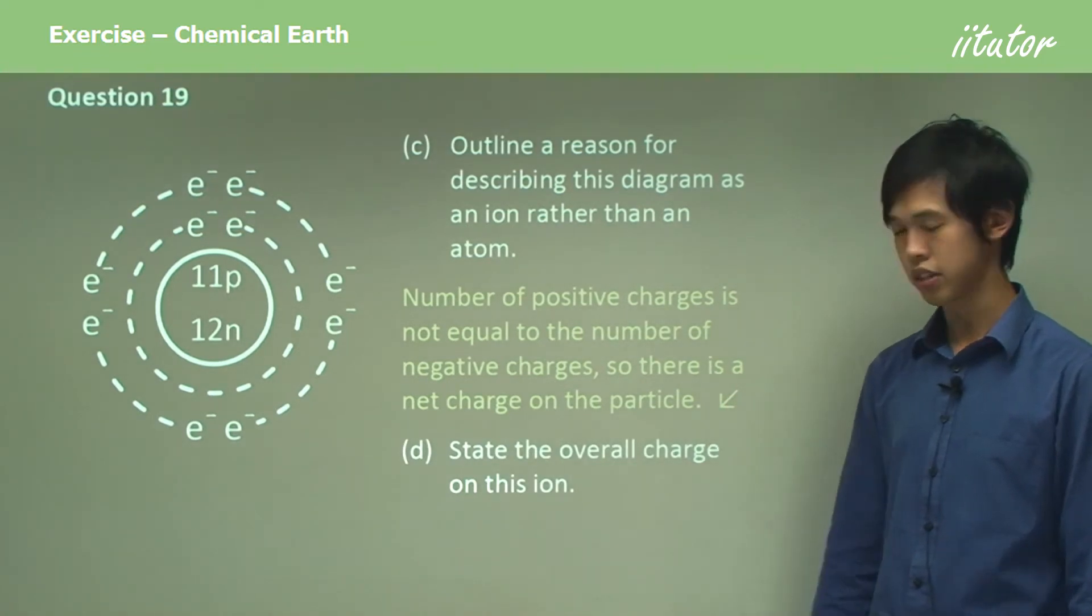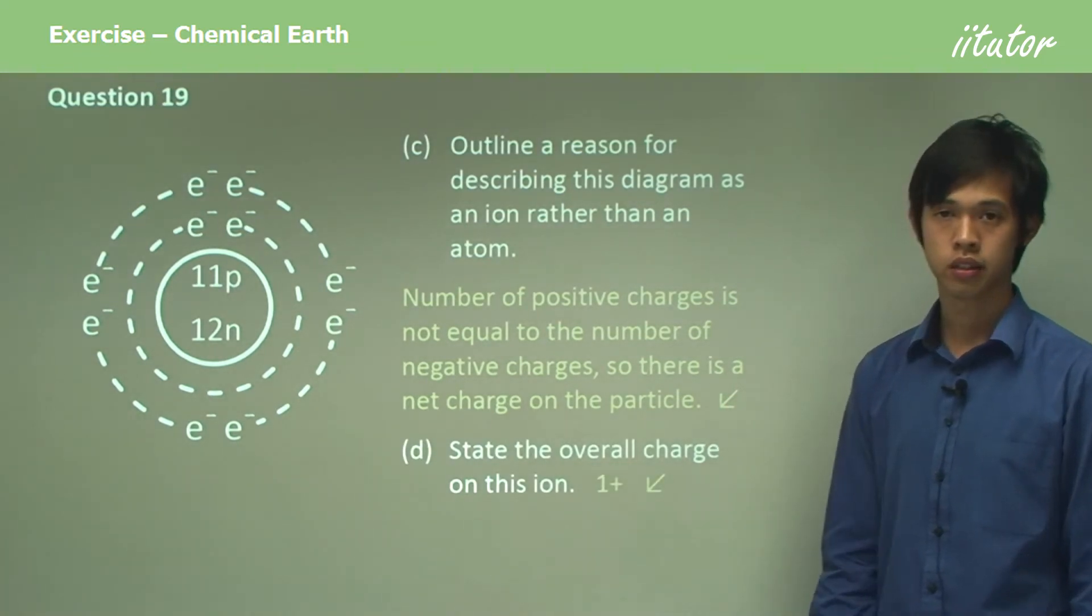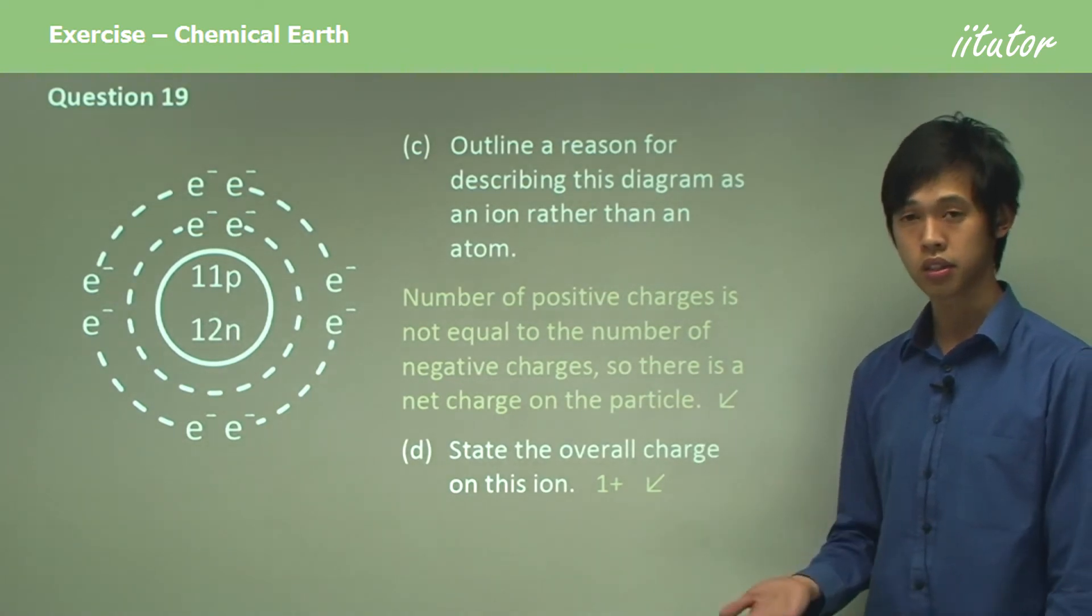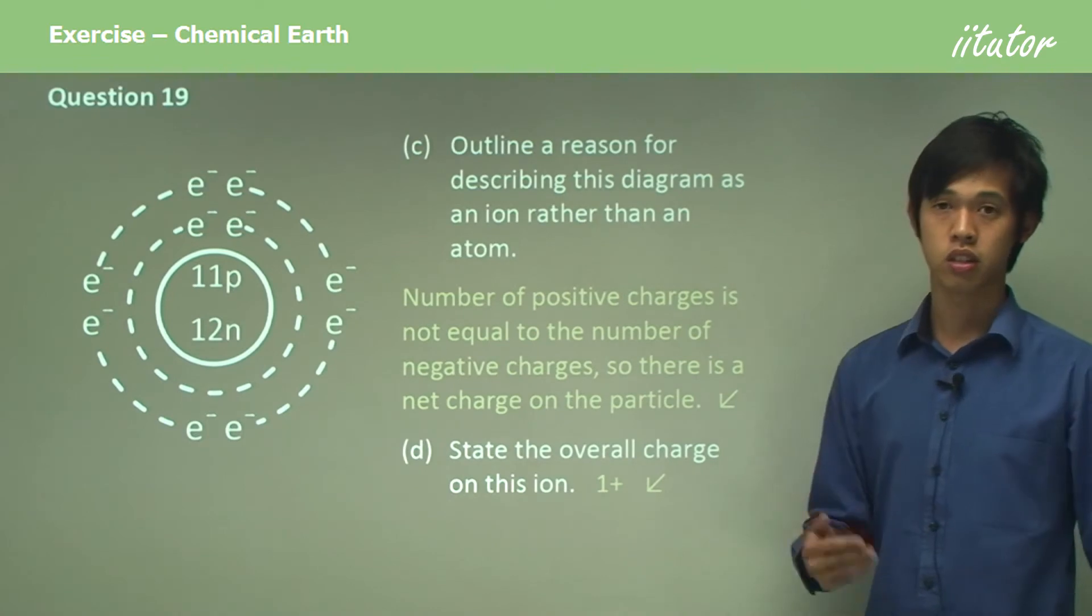State the overall charge on this ion. It's 1 plus. Because there is one more proton than there are electrons, and so it is charged to plus 1.